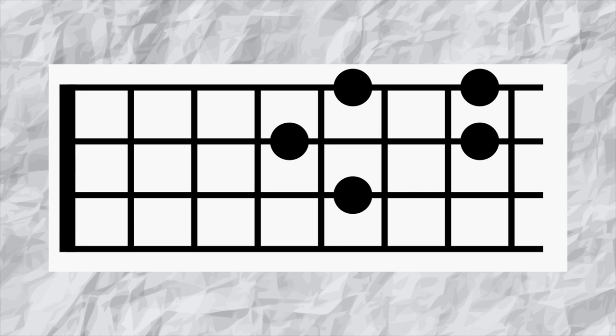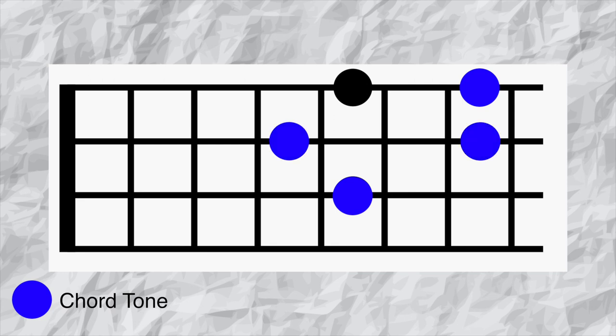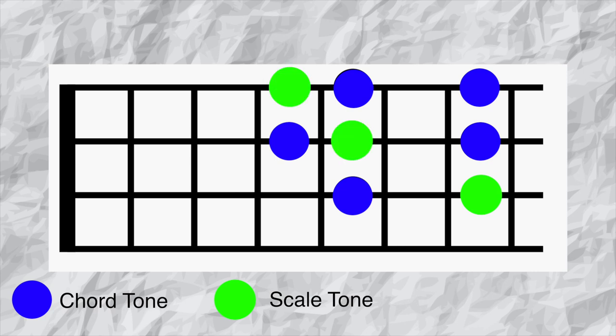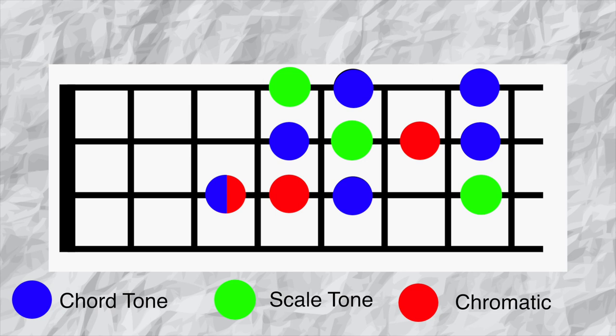The chord tones of the dominant 7th chord are a root, a third, a fifth and a flat 7th. The Mixolydian mode is a great choice to play over the dominant 7th chord as it contains all those notes plus the addition of the 2nd, the 4th and the 6th and the other notes we're going to consider as chromatic passing tones.